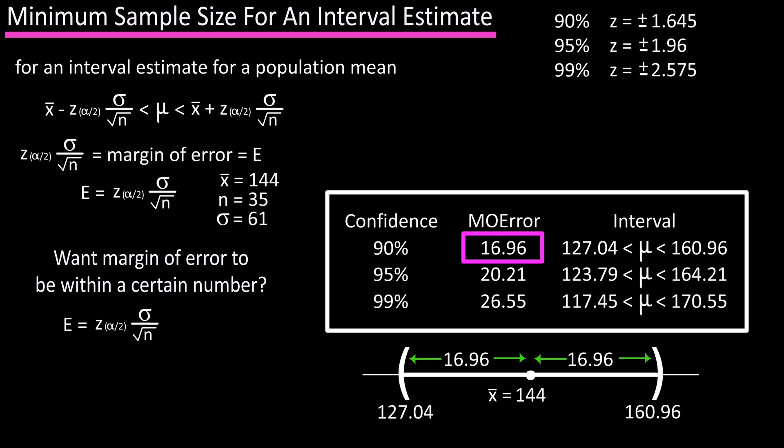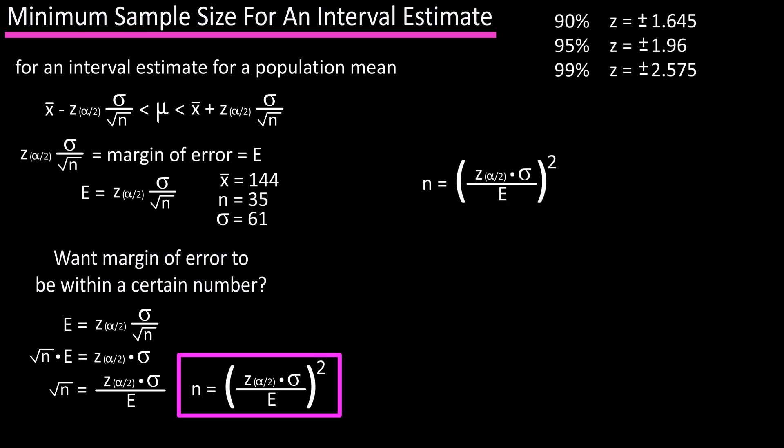What we can do is set this margin of error formula equal to E. Doing the calculations, we get n equals the quantity z(α/2) times σ, the population standard deviation, divided by E, the margin of error, squared. What we're doing with this formula is finding the minimum sample size needed for an interval estimate for the population mean.